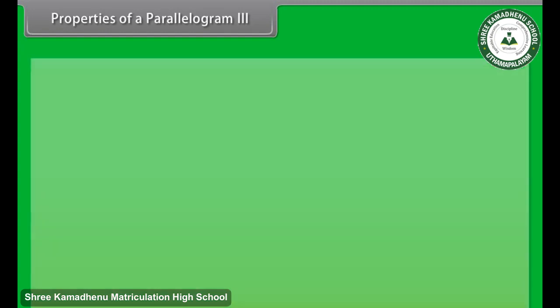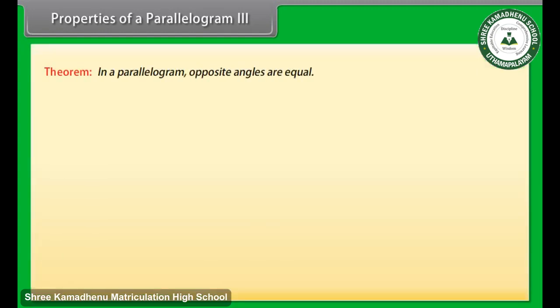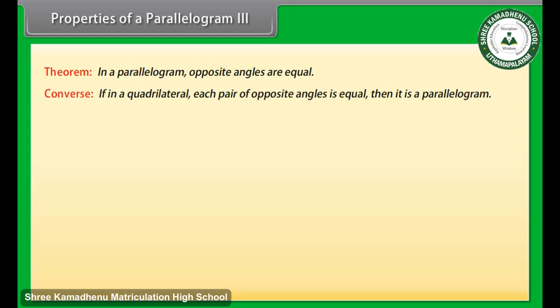Properties of a parallelogram 3. Another property of a parallelogram says that in a parallelogram, opposite angles are equal. The converse of this theorem says that if in a quadrilateral each pair of opposite angles is equal, then it is a parallelogram. Now let us find one more property.